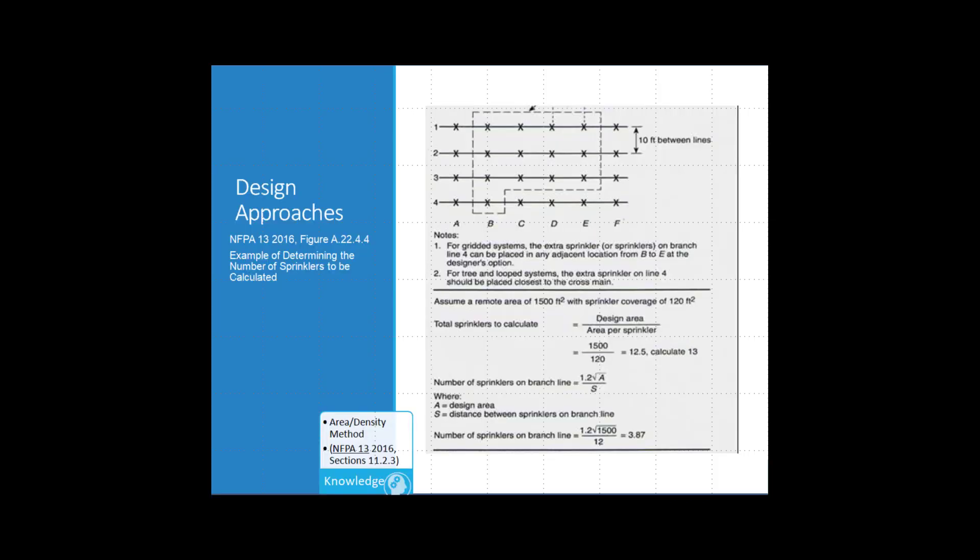Total number of sprinklers in the most remote or most demanding area shall never be less than 5 sprinklers. Figure A.22.4.4.4 is how we determine the number of sprinklers to be calculated in the most remote area.